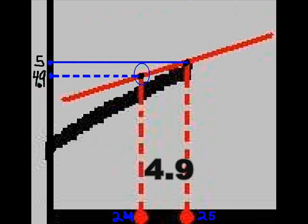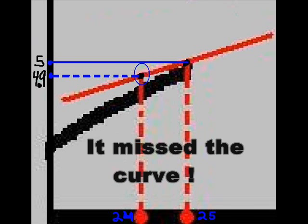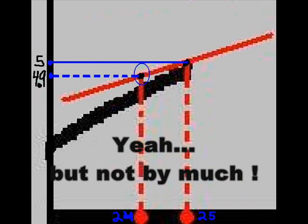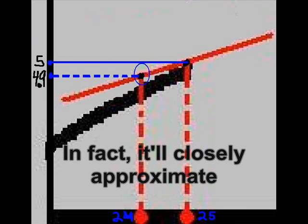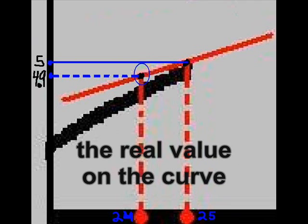Now I add these two up and what do I get? So what do you get? You get 4.9. It missed the curve. It missed the curve. Yeah, but not by much. In fact, it'll closely approximate the real value that is on the curve.